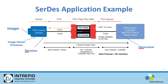Between the SERDES pairs you have a couple of different interfaces: either a 50 ohm coax or a 100 ohm twisted pair. With the coax interface, there's a possibility to transfer power over coax, or POC, within the SERDES technologies on various chips.